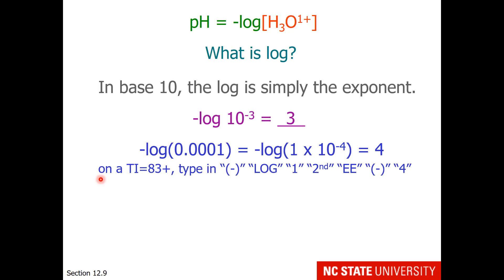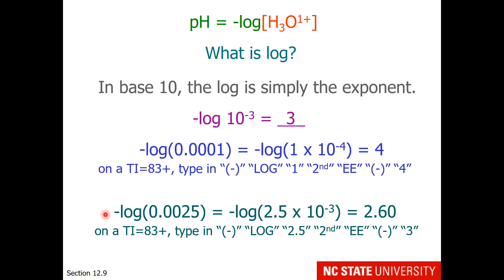Learn to use the EE key on your calculator — it will make it much easier than typing in 1 times 10 caret minus 4, and you don't usually need to remember to use parentheses because the EE takes that into account. So if you were asked what is the negative log of 0.0025, that value can be expressed as 2.5 times 10 to the minus 3. We know the log is going to be something close to 3 but a little bit lower, and it turns out to be 2.6.